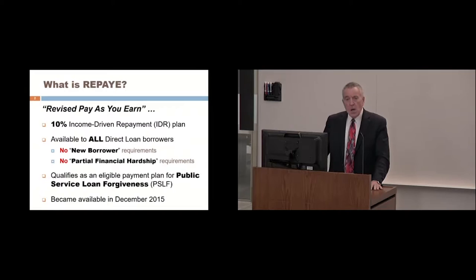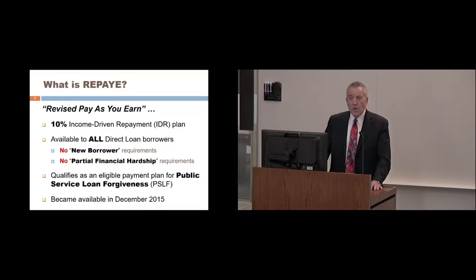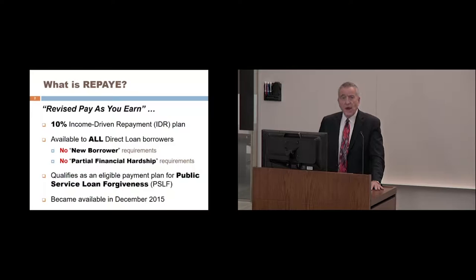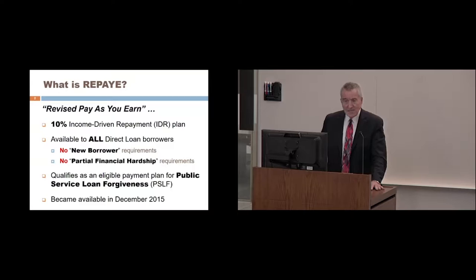What is REPAYE, or Revised Pay As You Earn? REPAYE is a 10% income-driven repayment plan. Federal student loans are unique in that they're the only form of credit where your monthly payments can be based on a percentage of your income rather than on the amount you owe. In the case of REPAYE, monthly payments are based on 10% of your household's annual discretionary income. This plan is available to all direct loan borrowers — direct subsidized or unsubsidized Stafford loans, direct Grad Plus loans, or direct consolidation loans are all eligible.